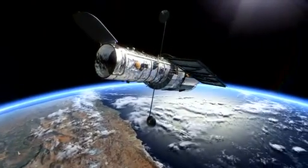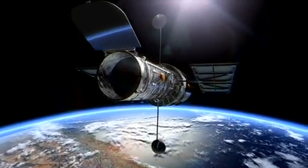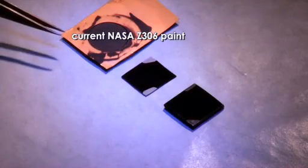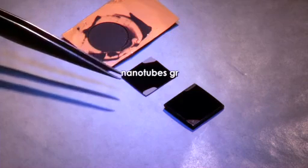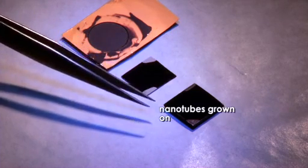So one example where carbon nanotubes can enhance the performance of a scientific instrument in space is through their ability to absorb light. The Z306 paint is the blackest thing that we put on instruments right now. The fact that we're blacker than that makes us blacker than black in terms of performance.